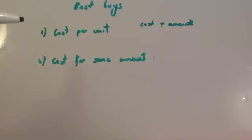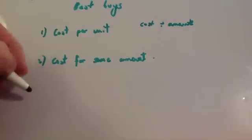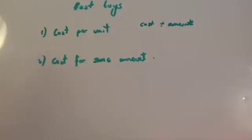There's two ways to work this out. The first one is to look at the cost per unit. For instance, if I was given six packets of crisps for £1.50, divide the £1.50 by six to find out the cost for one packet of crisps.